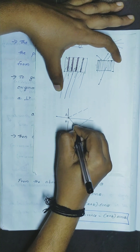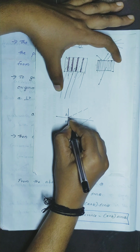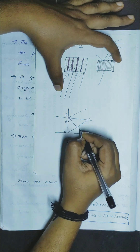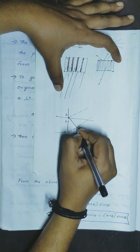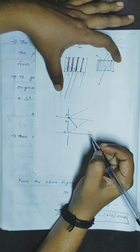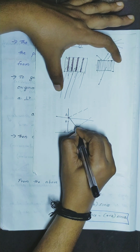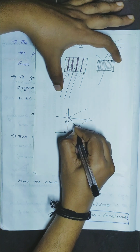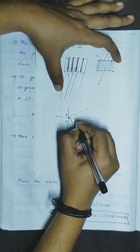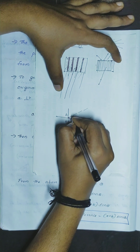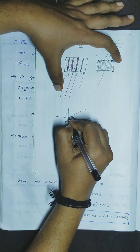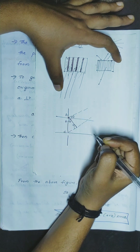AC is the hypotenuse. The angle ACN is 90 degrees. This is the theta angle.